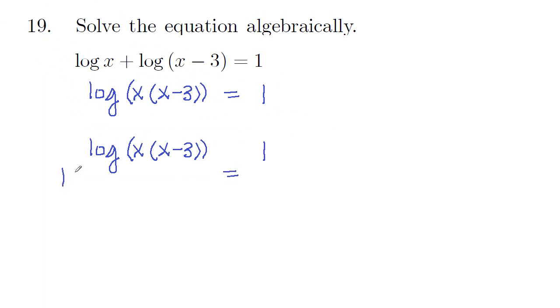So 10 to the power log base 10 of x times x minus 3 equals 10 to the power 1. So 10 and log base 10 cancel out by cancellation laws. We're left with x times x minus 3 is equal to 10 to the first, which is 10.